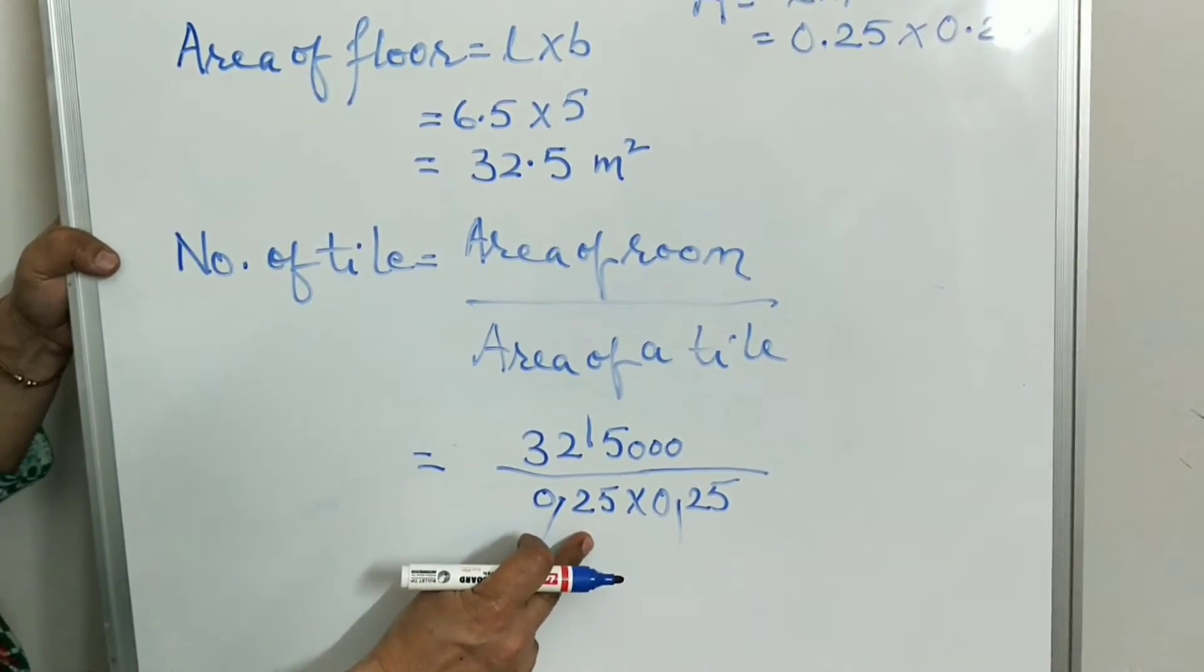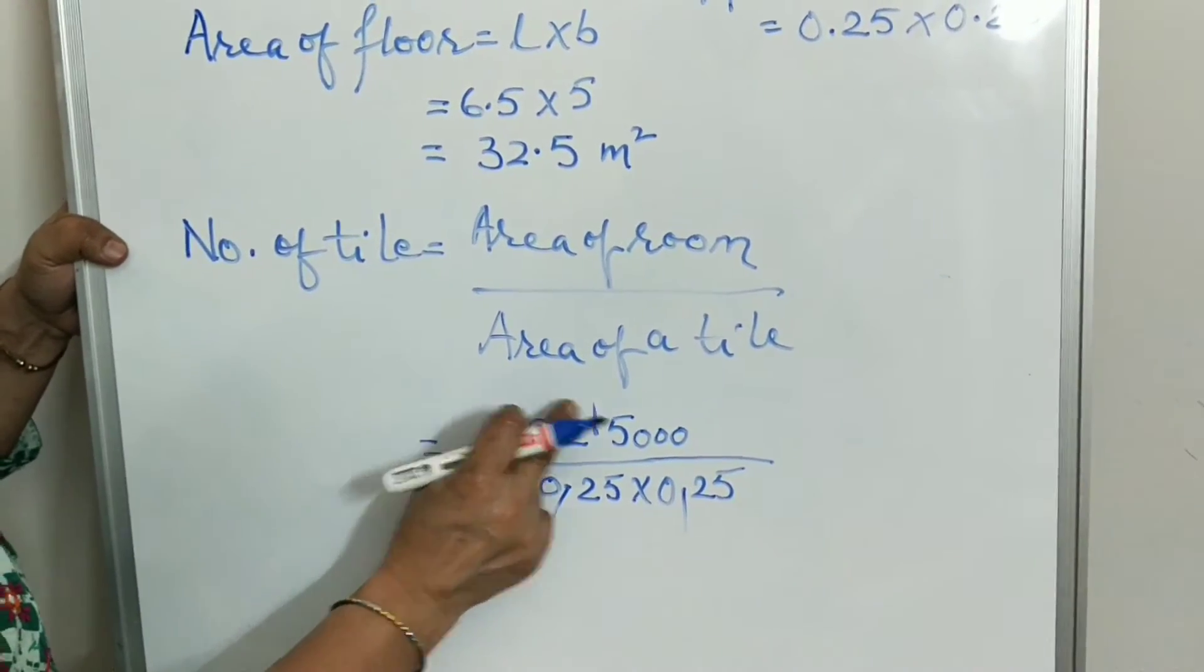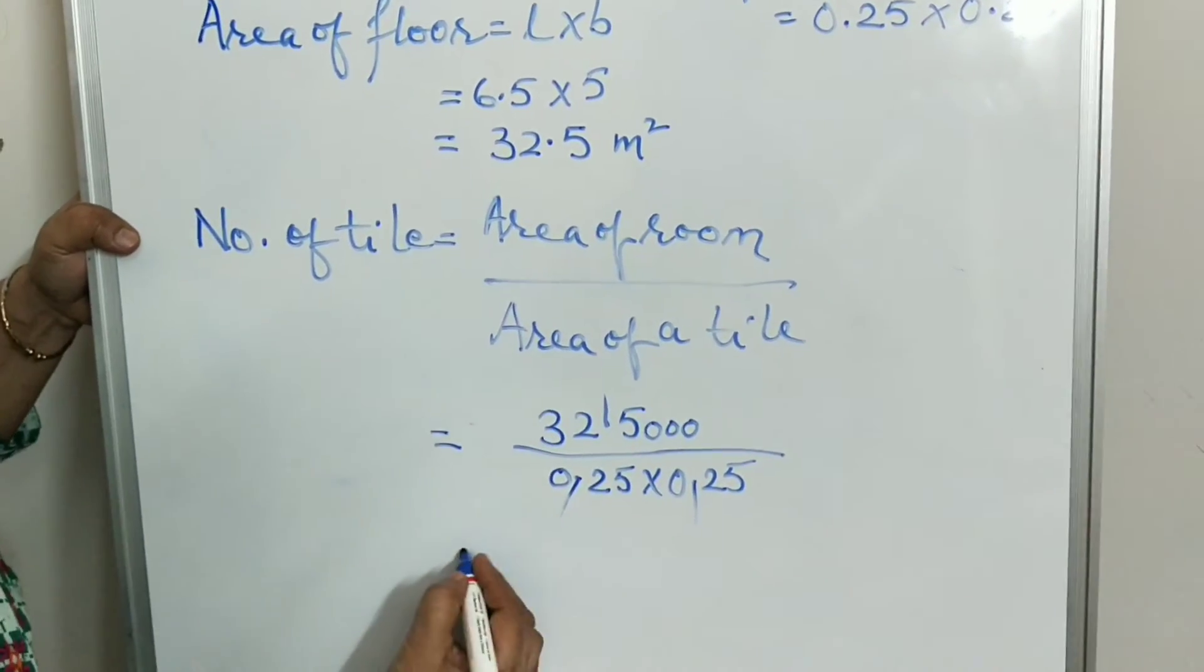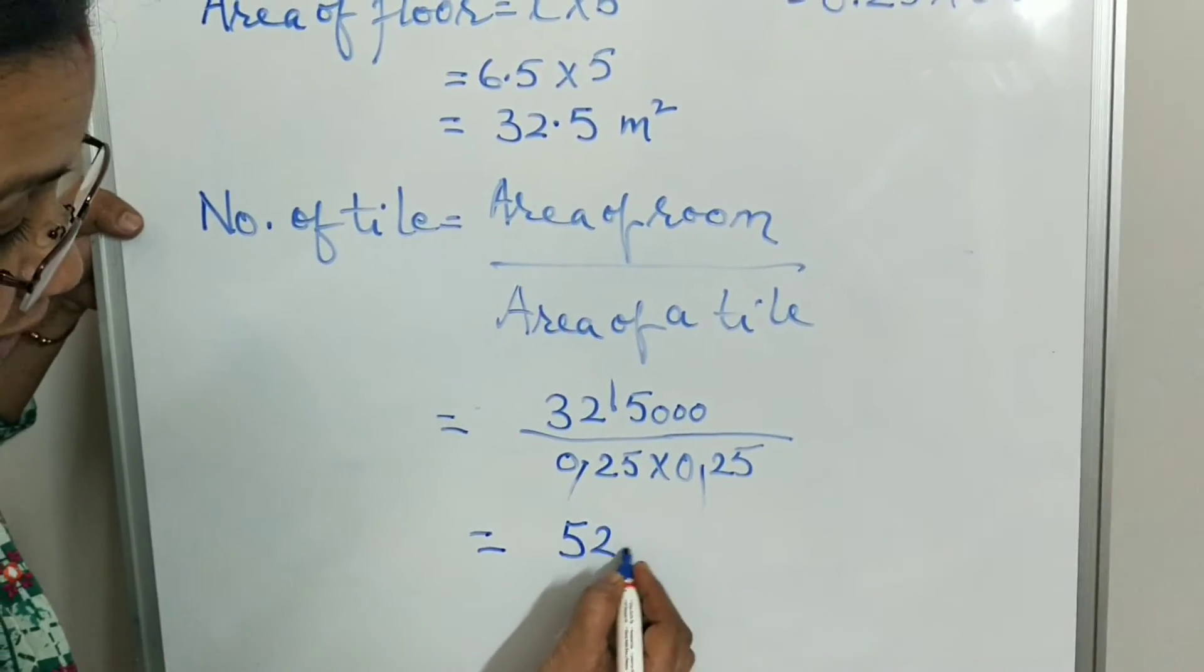Now for calculation we have 25 into 25, and above the value is 32,500. When we do this calculation, we get 520. 520 number of tiles.